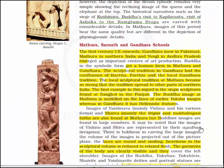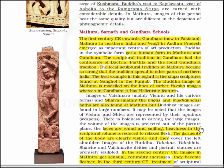Now let's read about the Mathura, Sarnath and Gandhara schools of art. From the 1st century CE onwards, Gandhara (now in Pakistan), Mathura (in Northern India) and Vengi (Andhra Pradesh) emerged as important centres of art production. Buddha's symbolic form got a human form in Mathura and Gandhara. The sculptural tradition in Gandhara had a confluence of Bactria, Parthia and local Gandhara tradition. The local sculptural tradition at Mathura became so strong that it spread to other parts of Northern India. The best example is the Stupa sculptures found at Sangol in Punjab. The Buddha image at Mathura is modeled on earlier Yaksha images, whereas in Gandhara it has Hellenistic features.